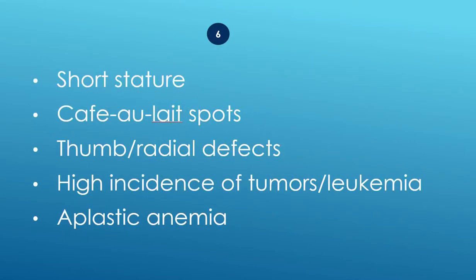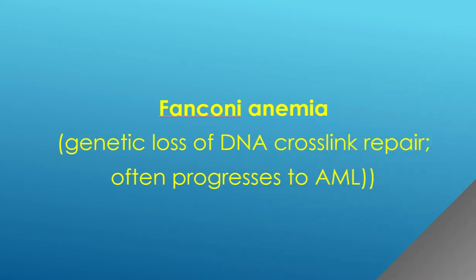Short stature, café au lait spots, thumb or radial defects, high incidence of tumors or leukemia, and aplastic anemia — Fanconi anemia. Genetic loss of DNA crosslink repair, often progresses to AML.